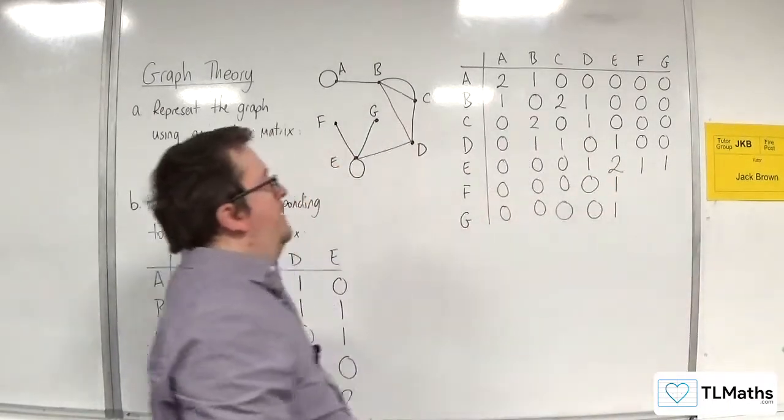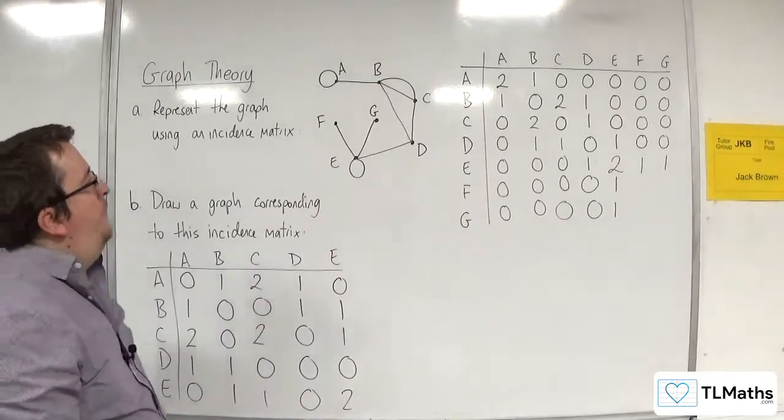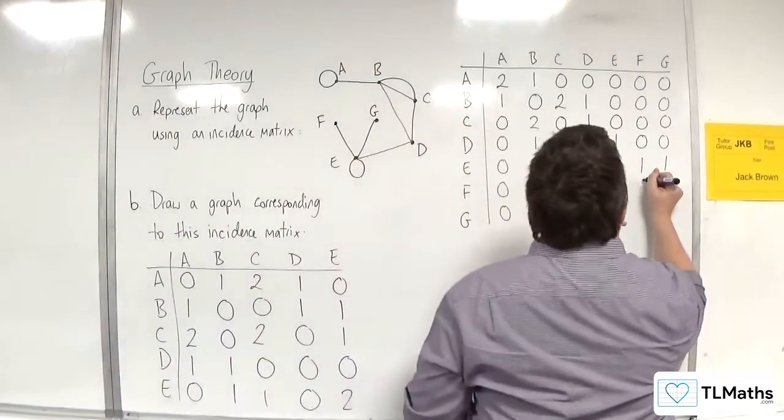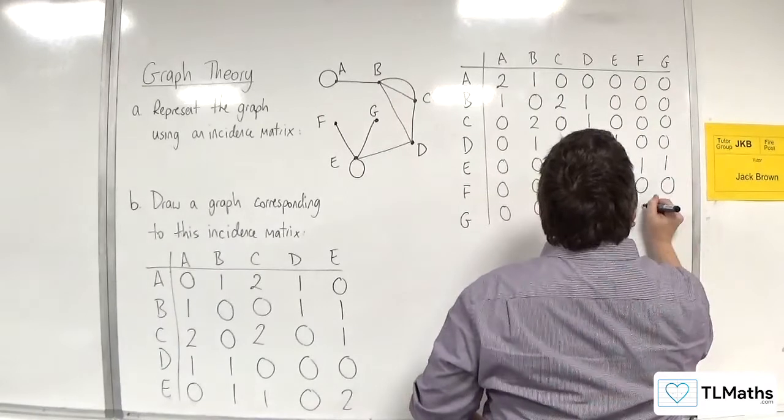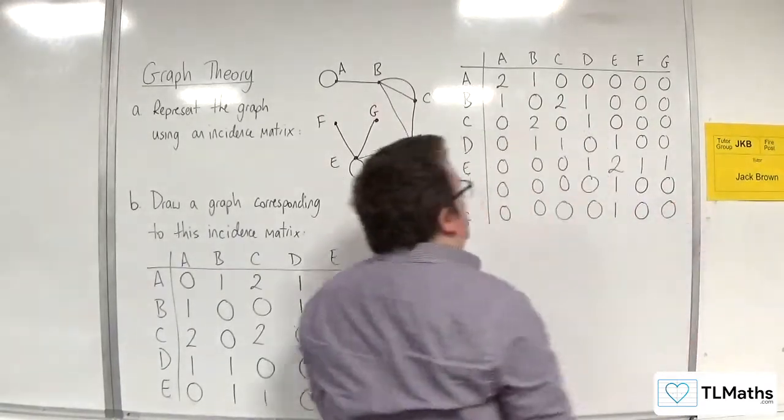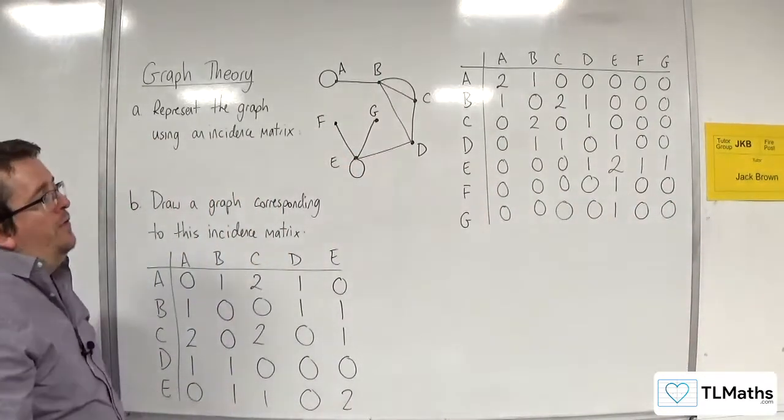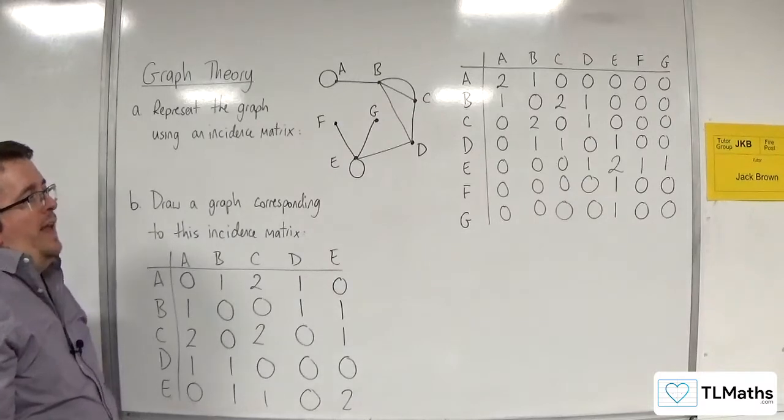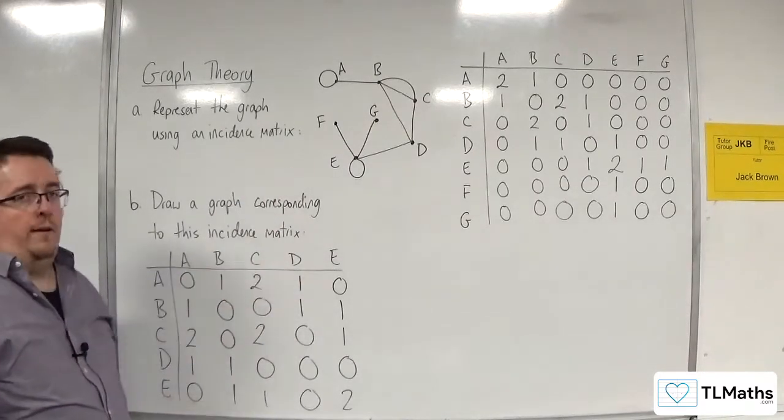F is not connected to itself and not connected to G. G is not connected to itself either. And so this is the incidence matrix for this graph.